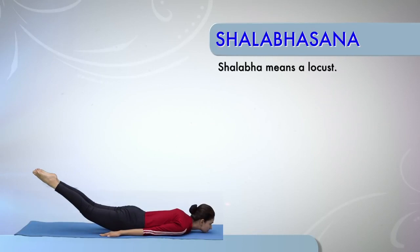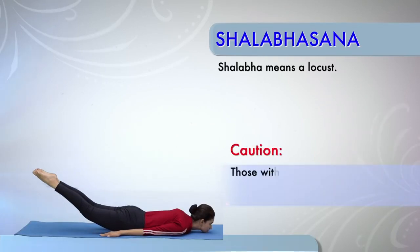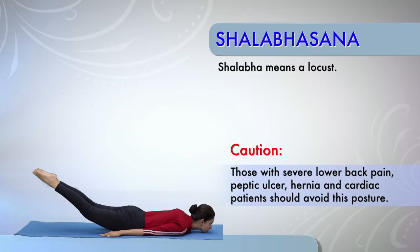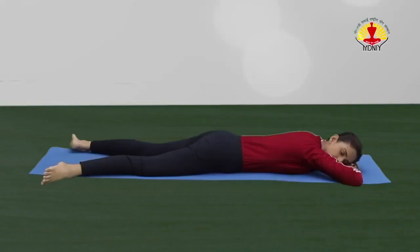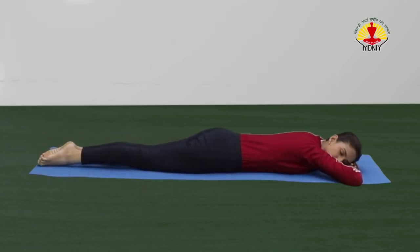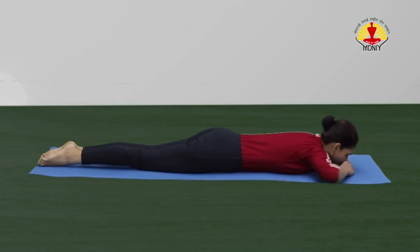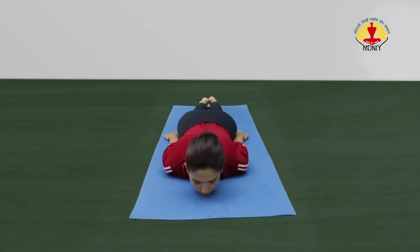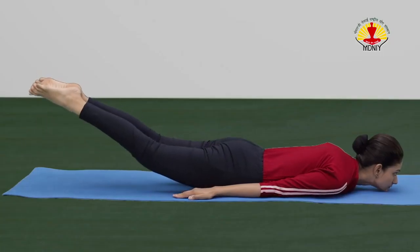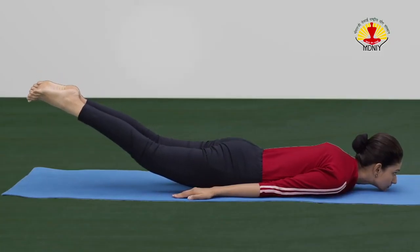Shalabhasana or the Locust Posture. Caution! Those with severe lower back pain, peptic ulcer, hernia and cardiac patients should avoid this posture. Start with Makarasana. Now join the legs and place both hands beside the body, palms facing downwards. Inhale. Exhale and lift both the legs off the floor without bending the knees.